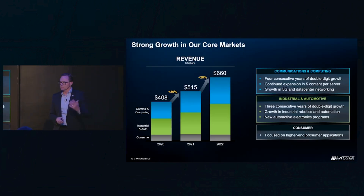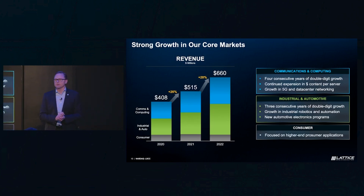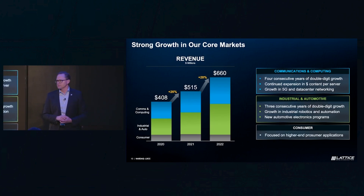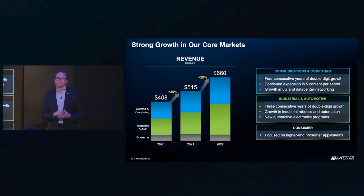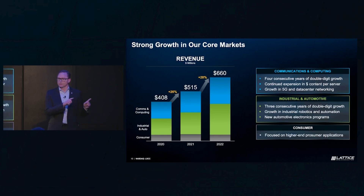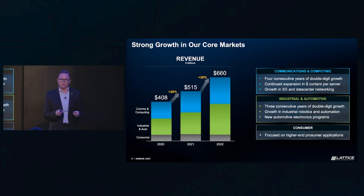The fourth goal — and maybe the most important to this particular crowd — was to continue to accelerate our top-line growth and bottom-line profitability. I'm really pleased with the progress the team has made. We've had really robust growth, coming from exactly where we expected: our core markets of communications and computing, and industrial and automotive. In comms and computing, we've now grown four consecutive years at double-digit growth rates, and in industrial and automotive, three consecutive years of double-digit growth.